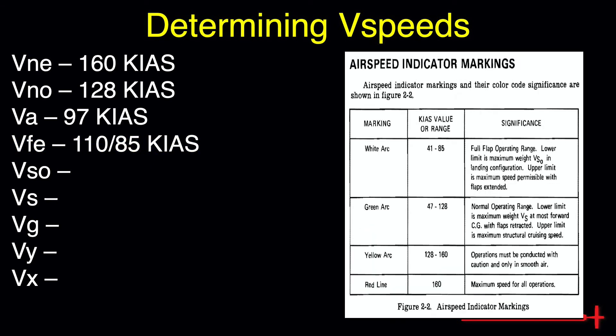Moving on to the airspeed indicator markings page, as long as we know how to read an ASI, we can find some valuable information here. The white arc depicts the full flap operating range. The lower limit depicts VSO, or full flap stall speed, of 41 knots. Below that, we can expect aircraft control to suffer or become non-existent. The upper limit shows max flap operating speed, and above this value we risk structural damage to the flaps.